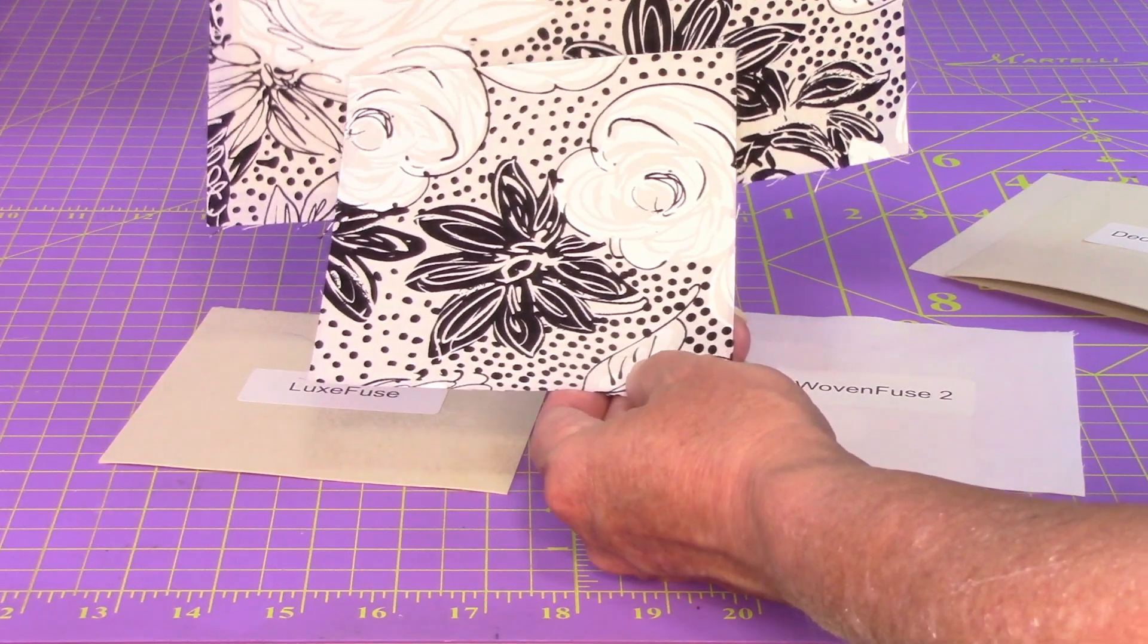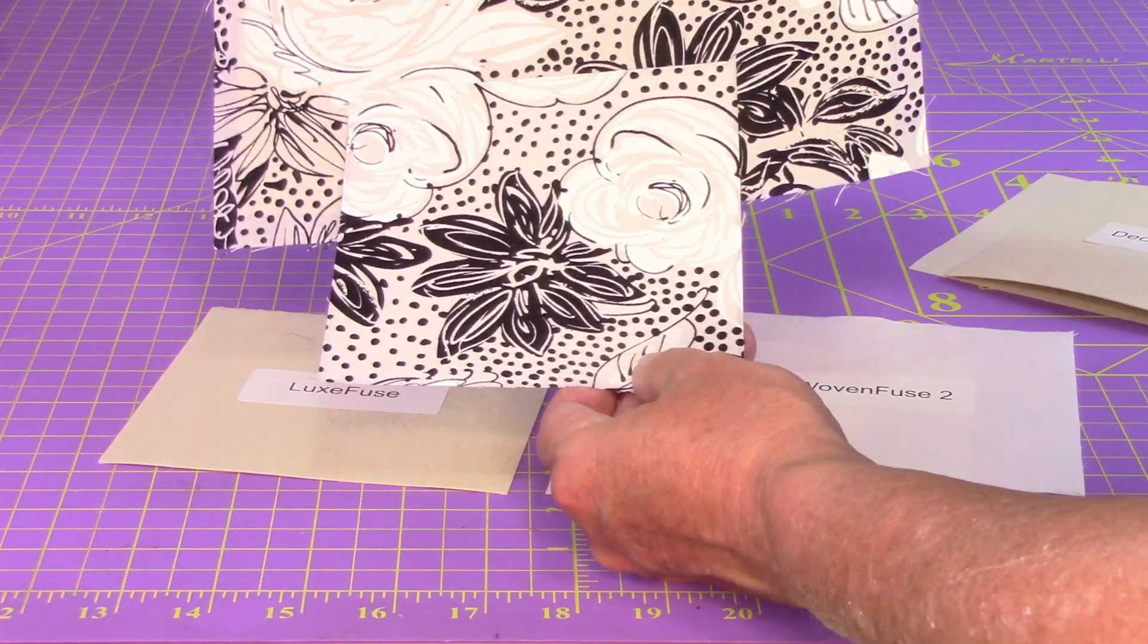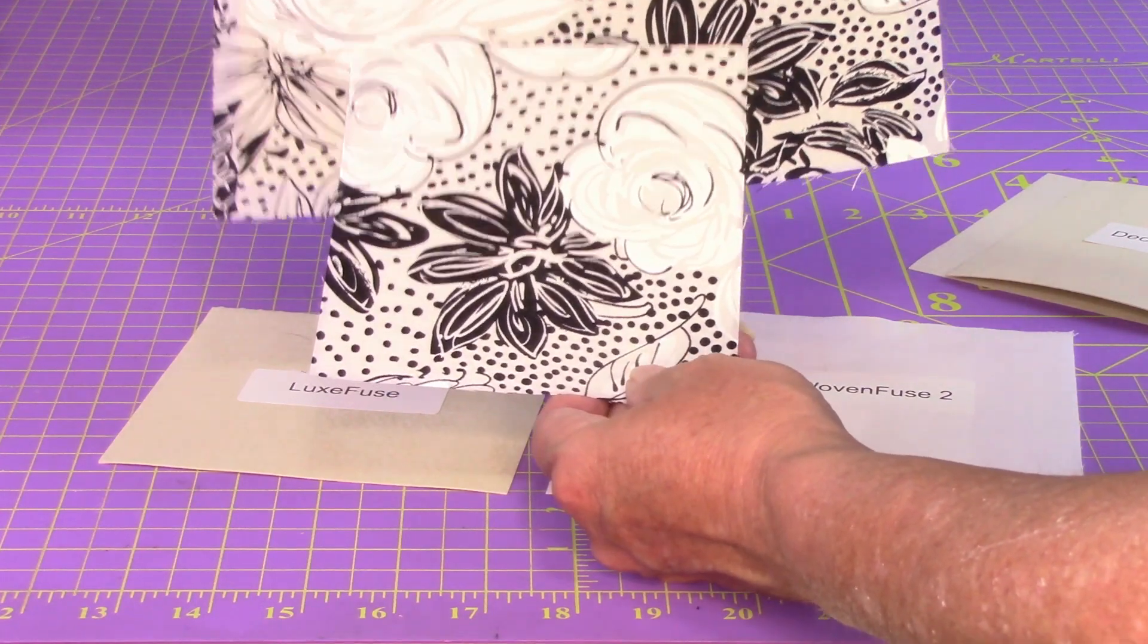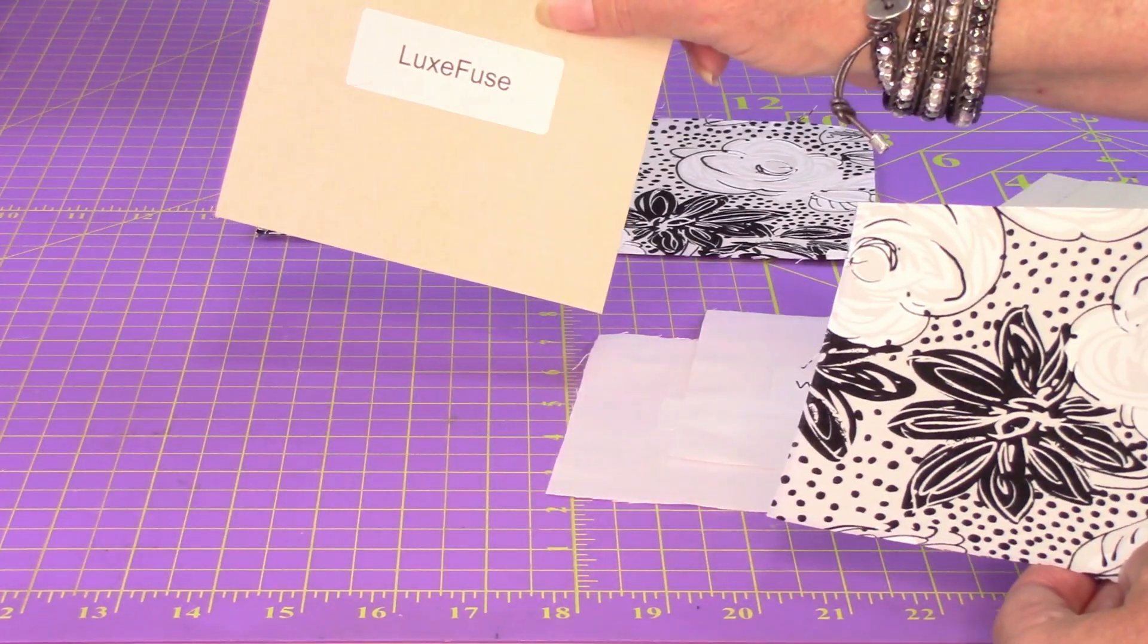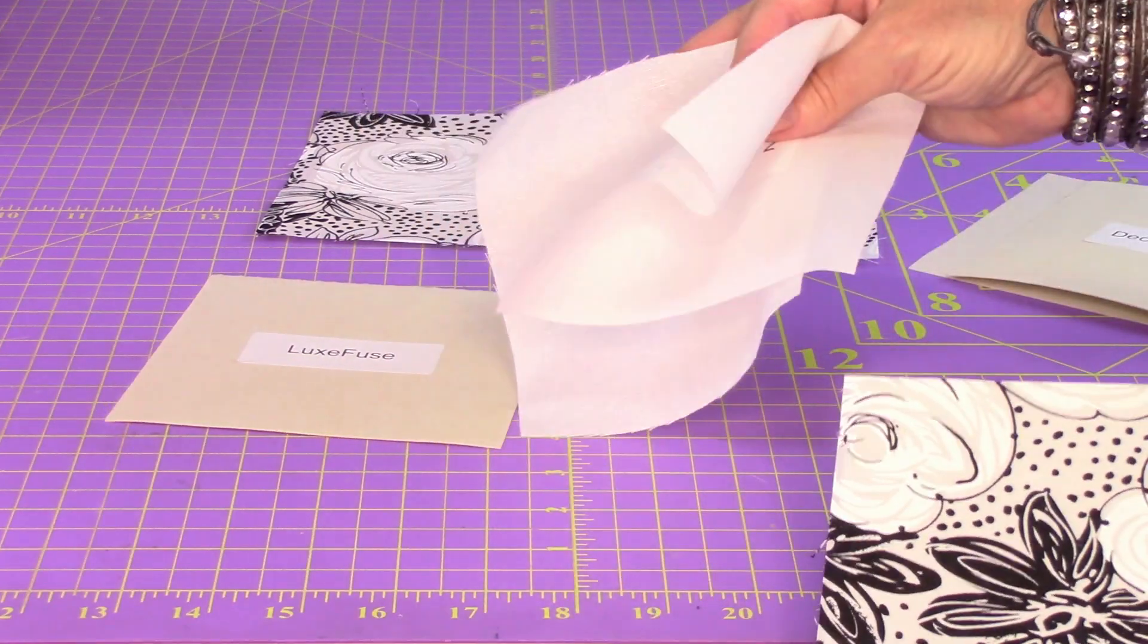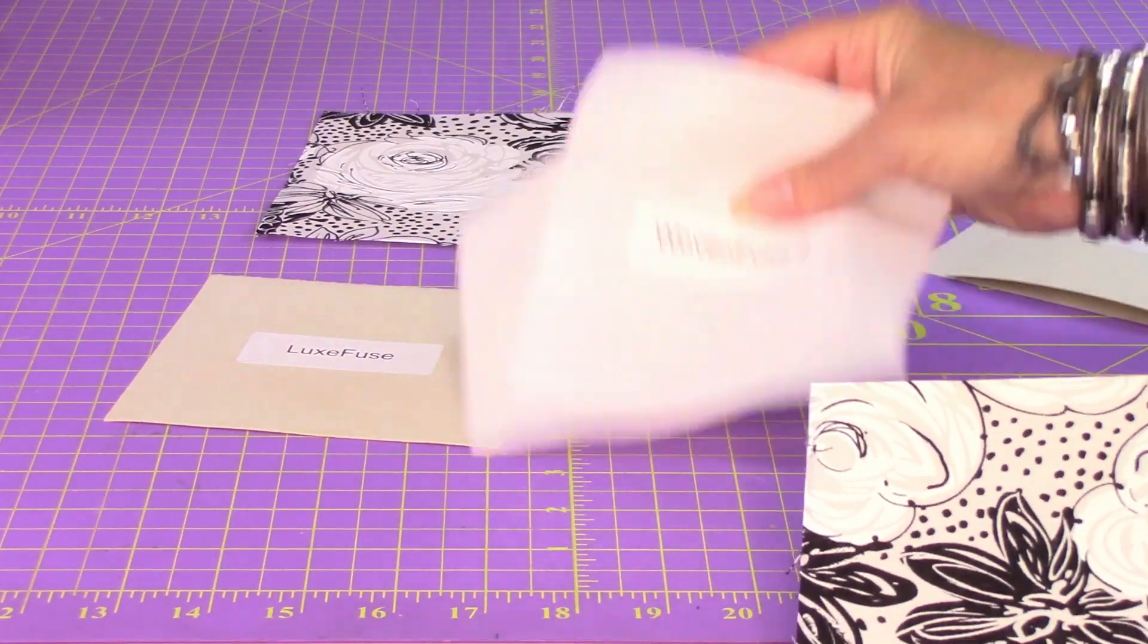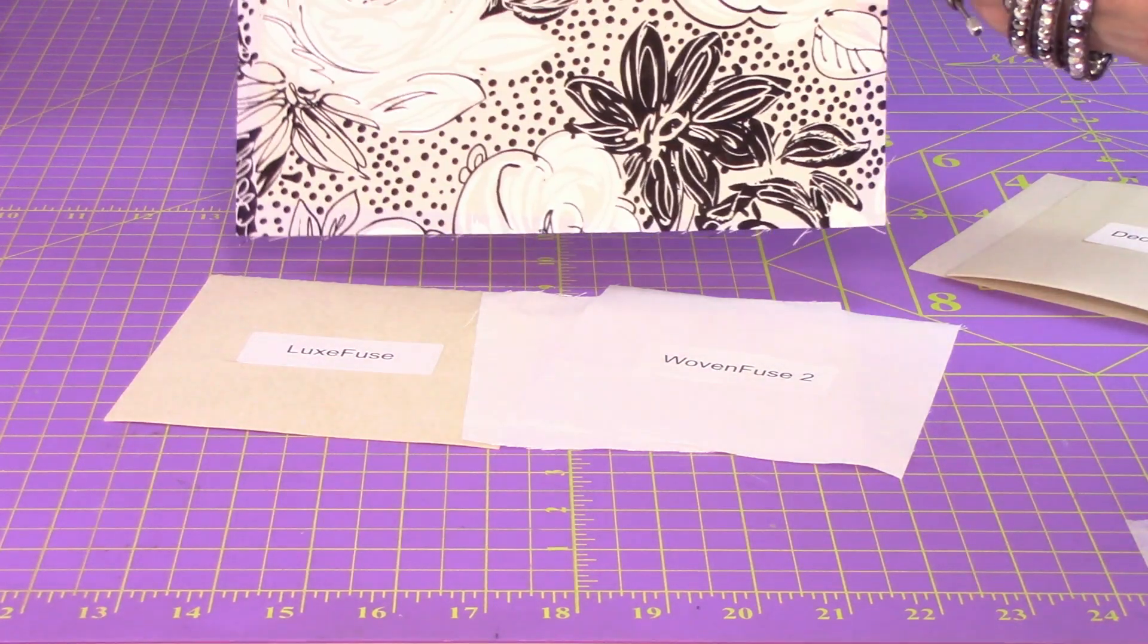And what I did was I put woven fuse too on it and then I put the LuxFuse on. And as you can see, it's a little whiter. So keep all of this in mind when you're making something because you might say, okay, well, I need a certain stability and a certain structure and I want to use this, but I can see through it. So you can mix and match them and put them together and get different stabilities and try to cover up the fact that it's see-through.